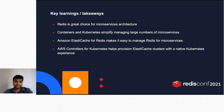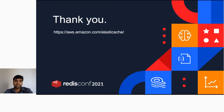Let's look at the key learnings and takeaways from this session. Redis is a great choice for microservices architecture. Containers and Kubernetes simplify managing a large number of microservices. Amazon ElastiCache for Redis makes it easier to manage Redis for microservices. AWS Controllers for Kubernetes helps provision ElastiCache clusters with a native Kubernetes experience. Thank you for joining us. I have links related to the ACK ElastiCache controller in the last slide — please download the slides and check out those links.